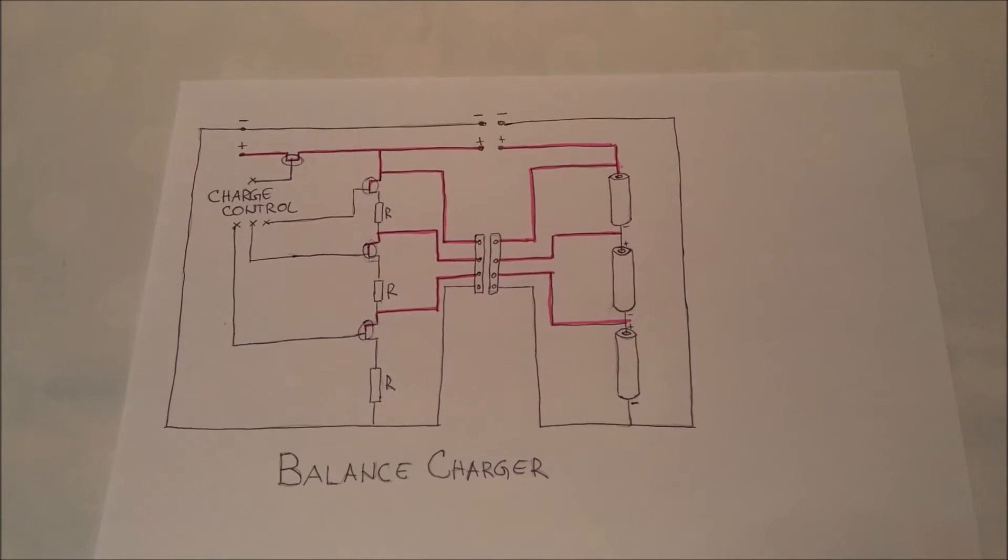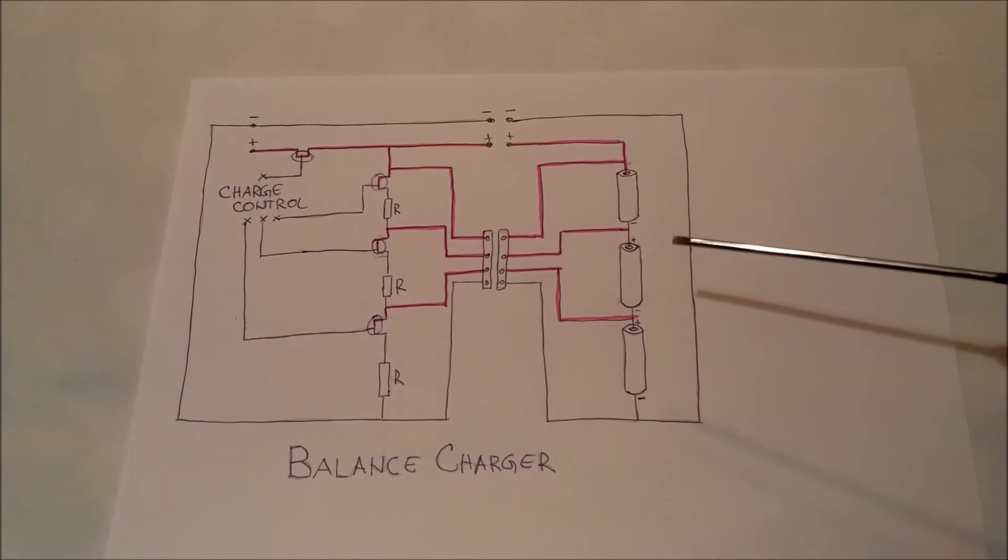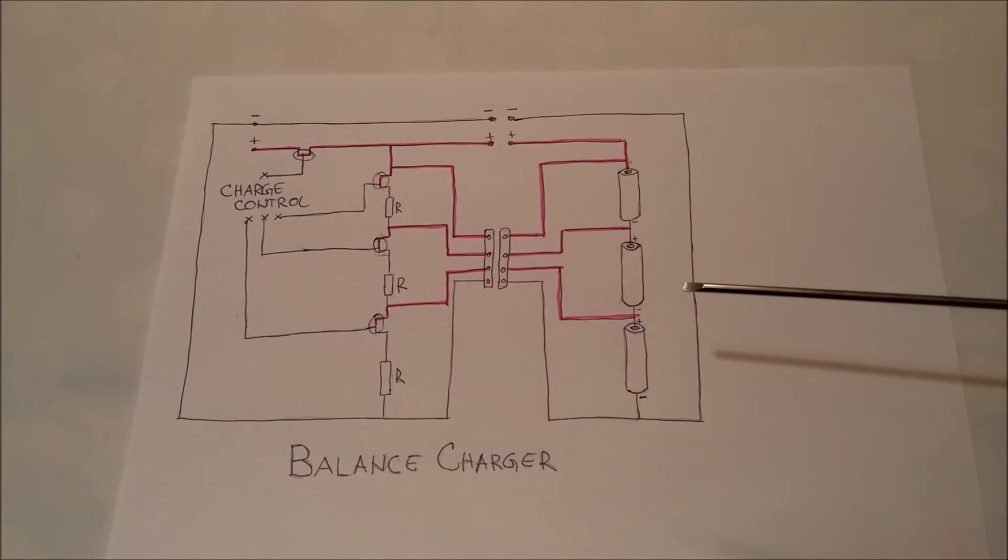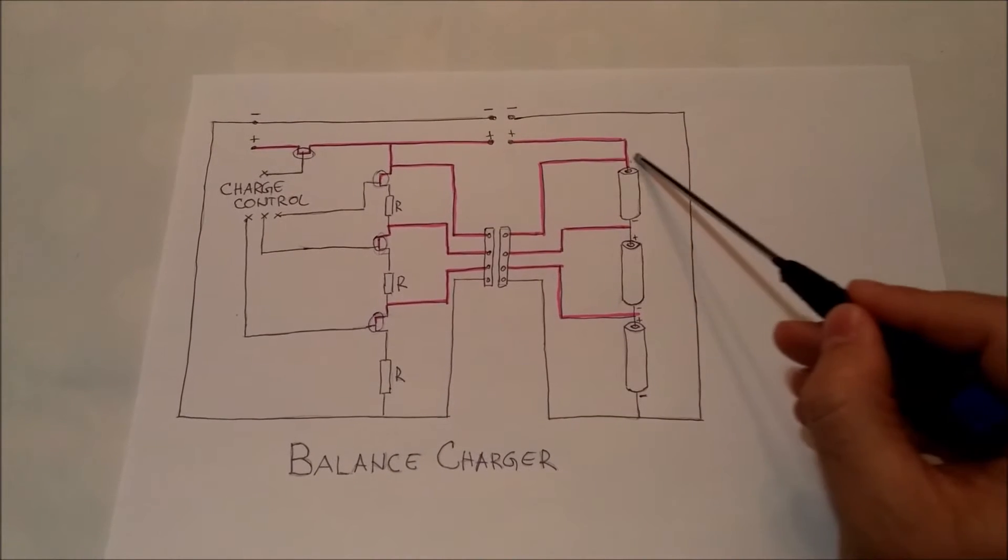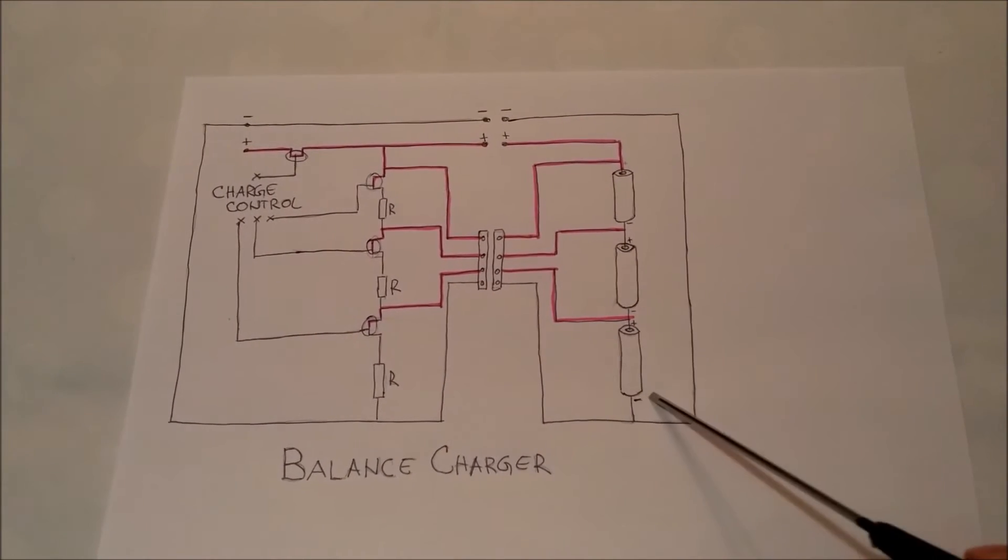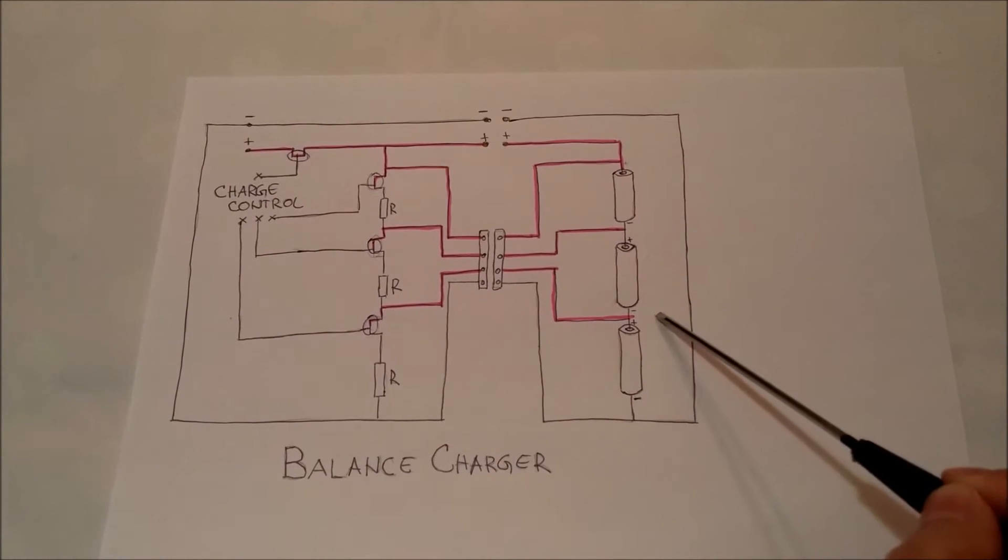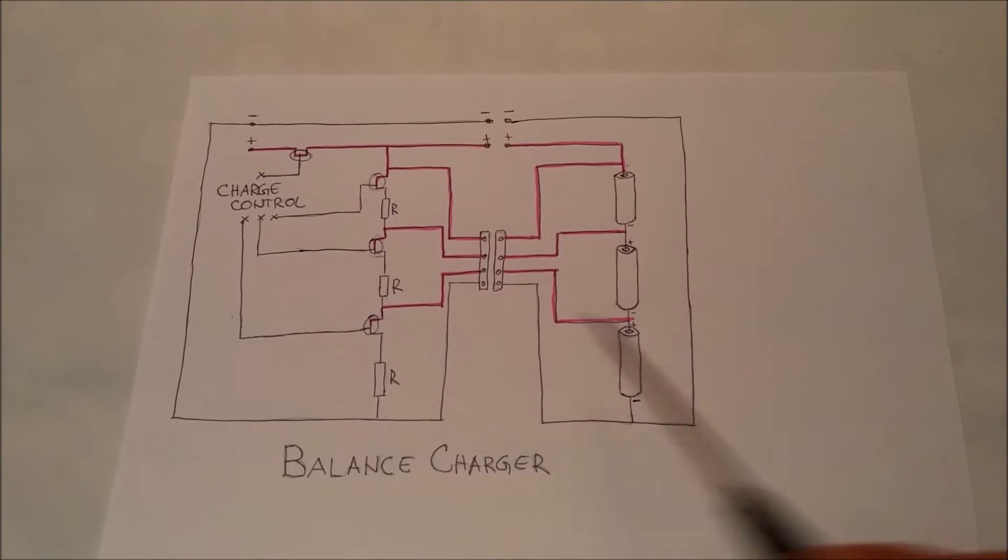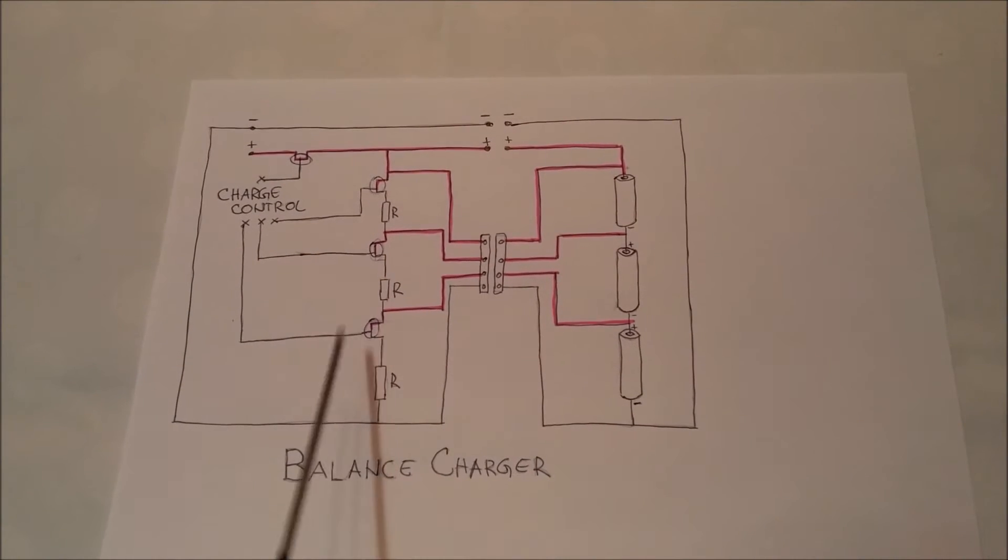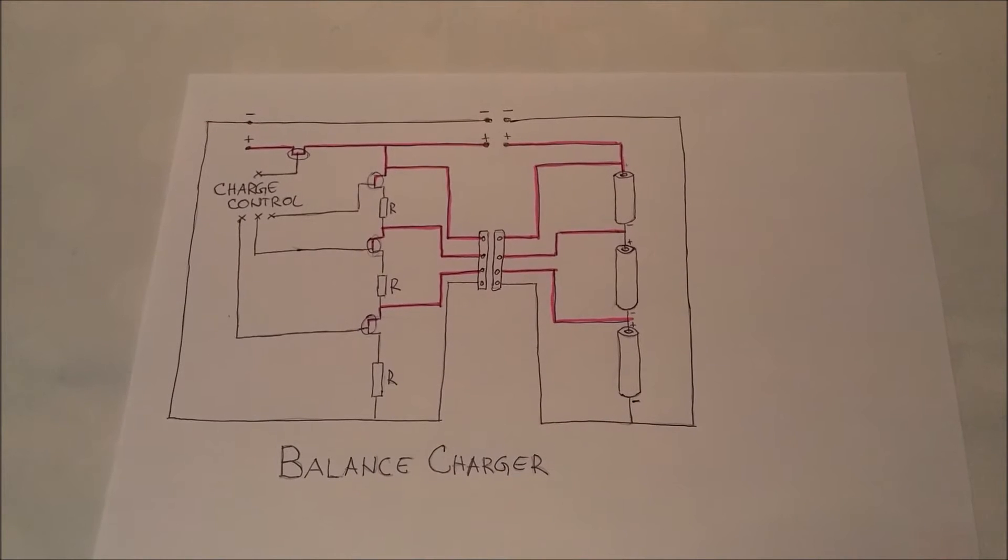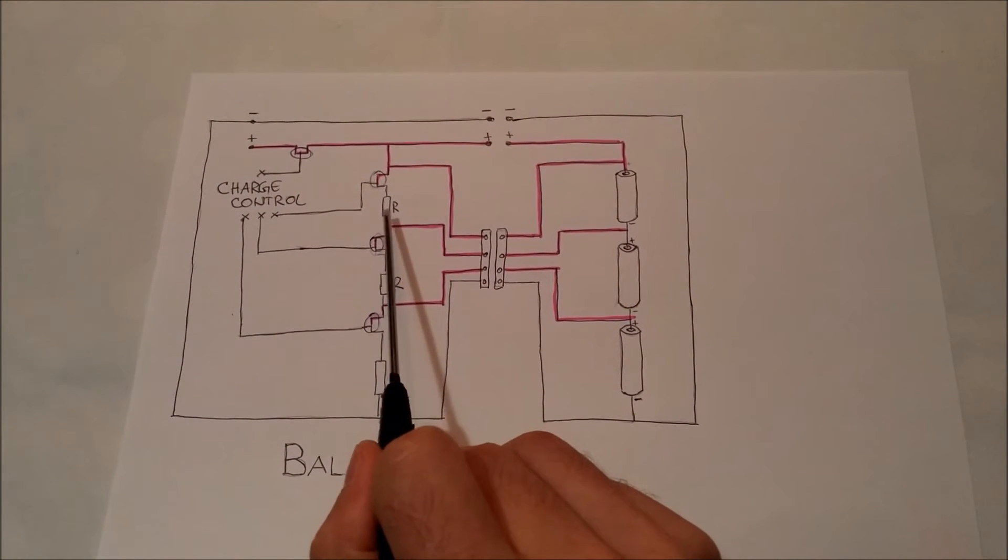As you can see, balanced charging takes a really long time, and depending on these cells here, if they're much bigger, this resistor is really small and this discharge can take too long.